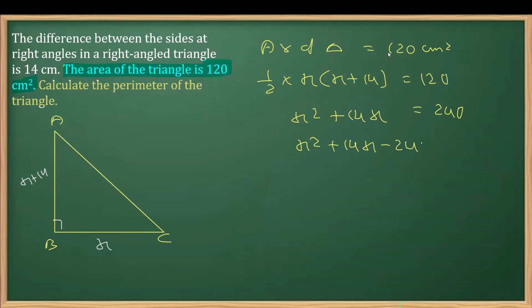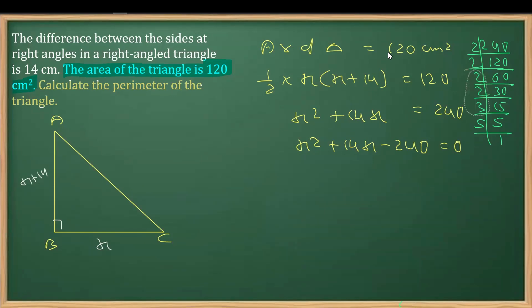Now for further simplification, we can figure out that we are going to get a quadratic equation, so we need to factorize this. For factorizing, we are going to factorize 240. To factorize this is 2 times 120, 2 times 60, 2 times 30, 2 times 15, times 3, 5 times, and 5, 1 times. So we need to get 14 from these factors.